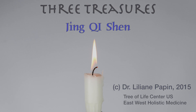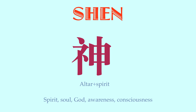So let's look at the Shen. First of all, let's look at the character — very interesting character. On the left you have a character that's 'altar' and on the right is 'spirit.' There are so many possible translations for Shen. The problem with our languages is that when we imprison the meaning in one word, we're missing the other — they're all embodied in this character in a visual way. You can translate Shen by spirit, soul, God, awareness, consciousness — anything that has some sacredness to it would certainly refer to Shen.